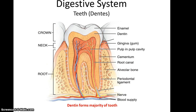Dentin forms the majority of the tooth bulk, but there are several layers. The outermost layer is the enamel — the white of the teeth. Below that is the dentin, which is a little darker in color. Deeper still is the pulp, found in the pulp cavity; it is the living part of the tooth, with blood vessels, nerves, and so forth. By regions: the part of the tooth above the gum line is the crown, the part around the gum line is the neck, and below that is the root. Cementum and periodontal ligaments help attach the tooth to the alveolar bone, which forms the socket the tooth sits in.